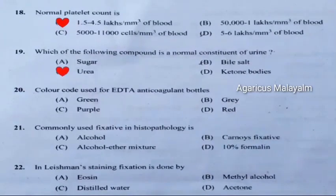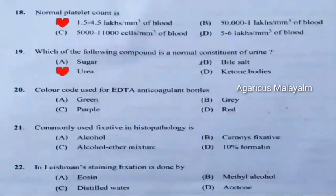Twentieth question: Color code used for EDTA anticoagulant bottle. Correct answer is Option C: Purple.